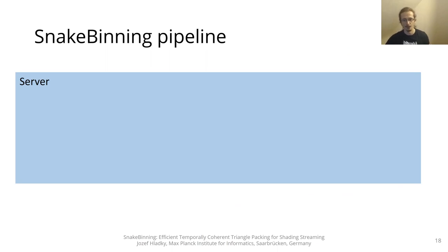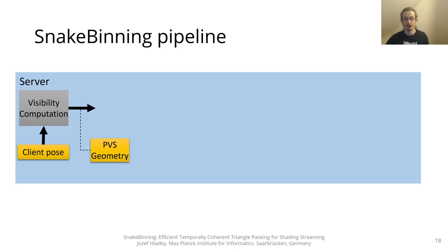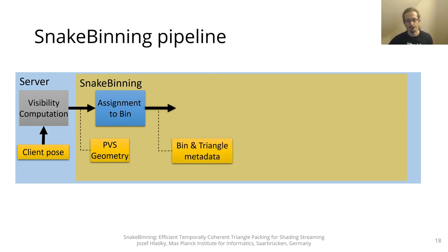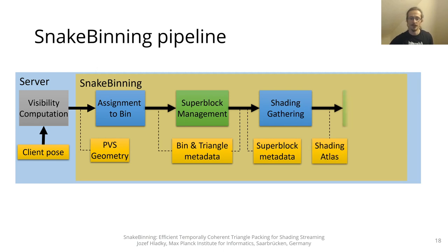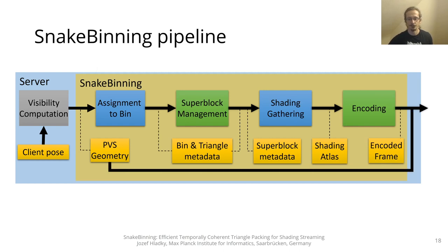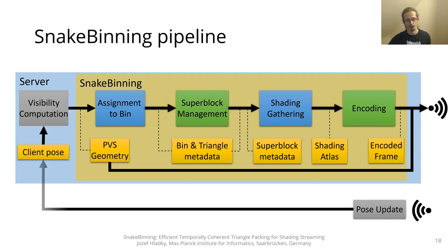Now I will introduce the pipeline in more detail. The PVS geometry is the input to our snake packing pipeline. As a first step, we assign each triangle to its corresponding bin. This is followed by a superblock management stage where we organize the bins into rectangular blocks in the texture atlas to increase atlas usage efficiency. Afterwards, we rasterize the PVS geometry into the shading atlas and gather the shading samples. Finally, we encode the shading atlas frame, combine it with the PVS geometry, and stream it to the client. The client streams back the updated camera parameters, closing the loop.